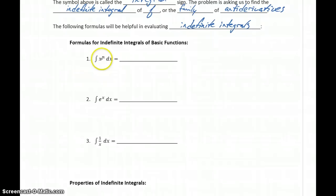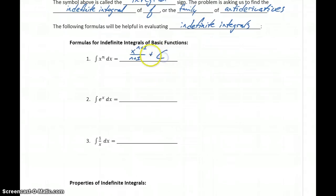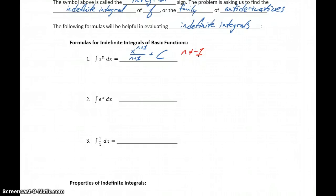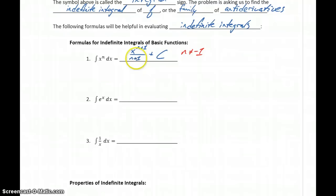We can write the indefinite integral of x to the nth power as x to the n plus 1 over n plus 1 plus some constant C. That will always be true except in the case where n equals negative 1, which we'll look at in just a second. So as long as n is not equal to negative 1, we can integrate this function by increasing the exponent by 1 and dividing by that exact same value.